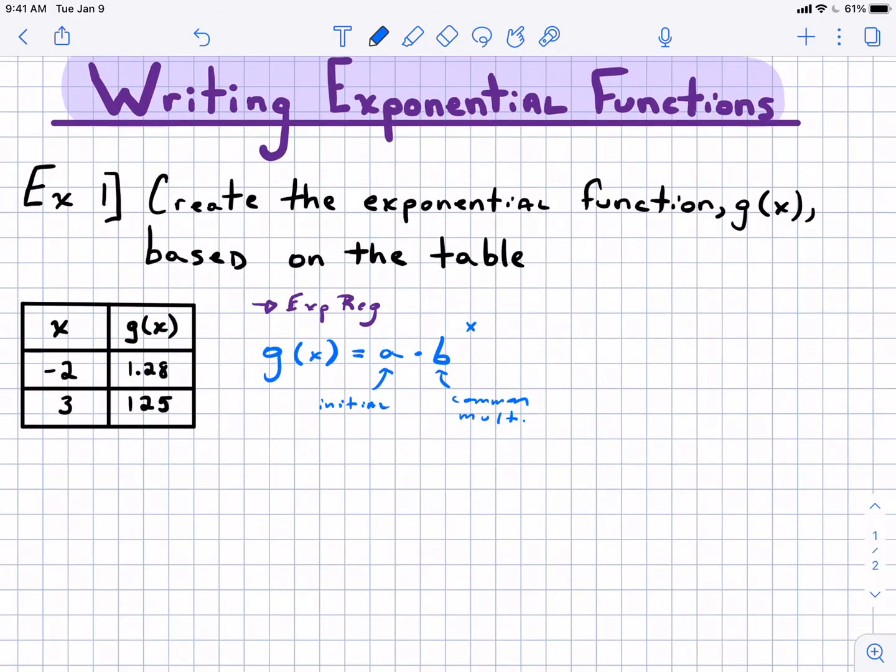So doing this algebraically, we're gonna start by actually using a system. What we're gonna do is plug in each pair of points separately to create two equations. So I'm carefully going to replace g(x) with that particular y value, that output value, and I'm gonna be stuck with two variables a and b we still don't know.